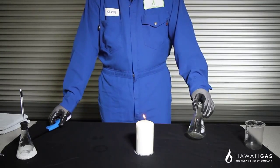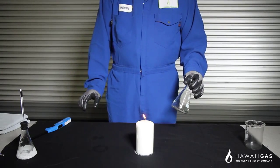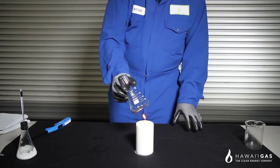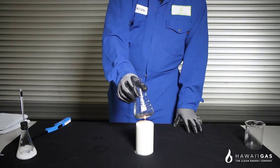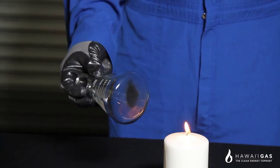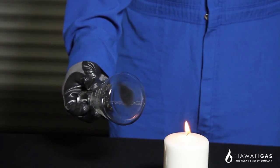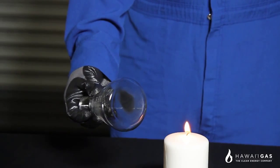In contrast, we'll put the same flask to a regular household candle made from paraffin wax, a derivative of oil. Within seconds of putting the flask to the flame, we can already see soot build up on the glass.